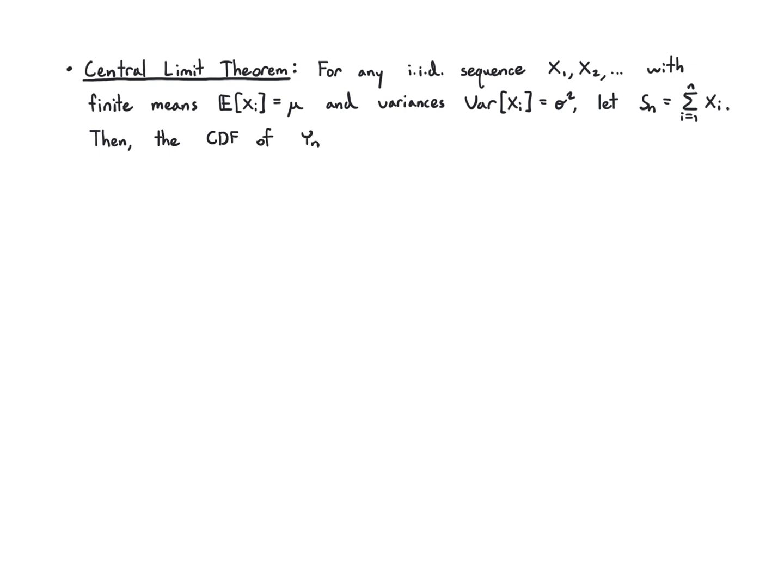Another thing that you see with sequences of random variables is the central limit theorem. And what it says is that for an i.i.d. sequence with finite means and finite variances, let's look at the sum of these random variables.